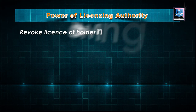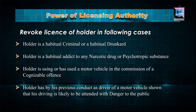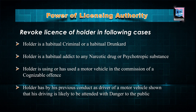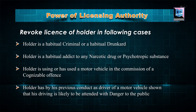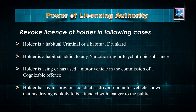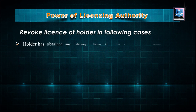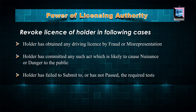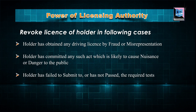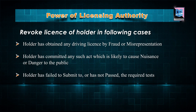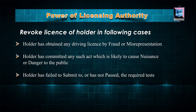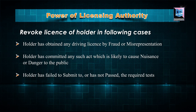The licensing authority has the power to revoke the license of any holder in the following circumstances: the holder is a habitual criminal or habitual drunkard; the holder is habitually addicted to any narcotic drug or psychiatric substance; the holder is using or has used a motor vehicle in the commission of a cognizable offense; the holder has by his previous conduct as a driver shown that his driving is likely to be attended with danger to the public; the holder has obtained a driving license by fraud or misrepresentation; the holder has committed any act likely to cause nuisance or danger to the public; or the holder has failed to submit to or has not passed the required test.